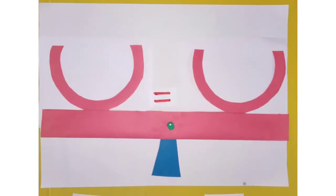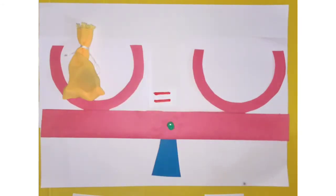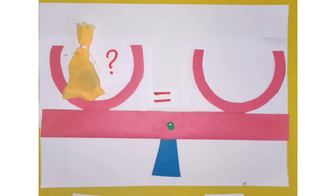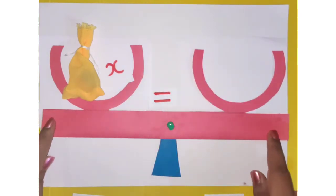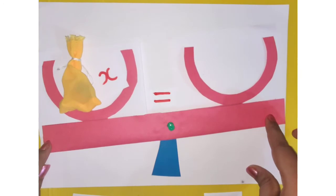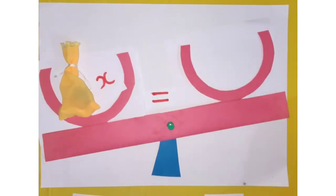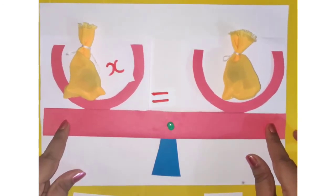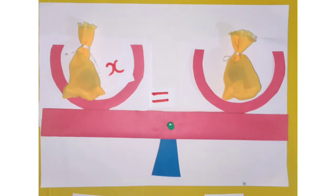We often talk about the unknown quantity while solving linear equations. Let me take this bag here — I can use a question mark to label it since we don't know what's in it. But typically in algebra, we use a variable x. Since the bag is placed on one side, the scale gets unbalanced, so we place another bag with the same weight on the other side to balance it.